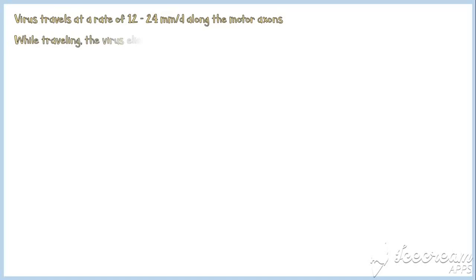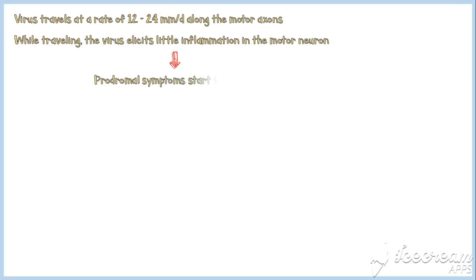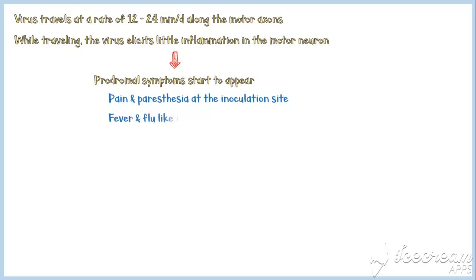The virus travels along the motor axons at a rate of 12 to 24 mm per day. While traveling, the virus elicits little inflammation in the motor neuron. At this point, prodromal symptoms of the disease start to appear, including pain and paresthesia at the inoculation site, fever and flu-like illness.